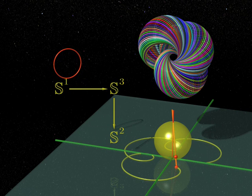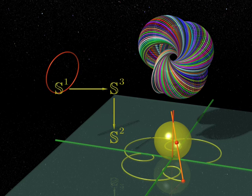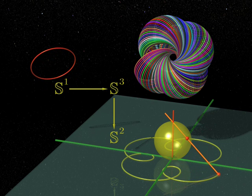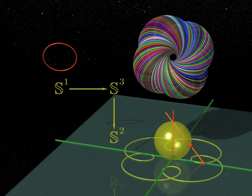Mathematicians say that above any point of the base, S2, there is a fiber, which is a circle, S1, and that the total space of this vibration is the sphere, S3. I am very proud of my vibration, all the more so because it has become a fundamental object in topology.